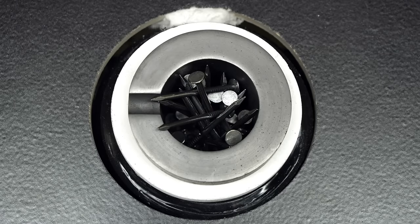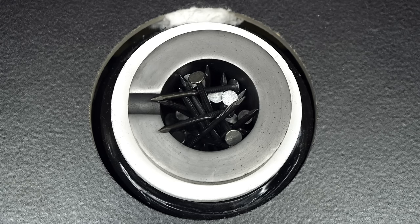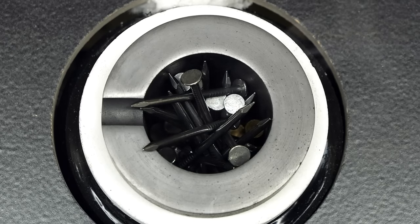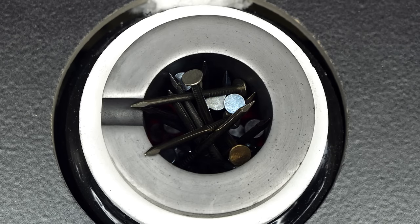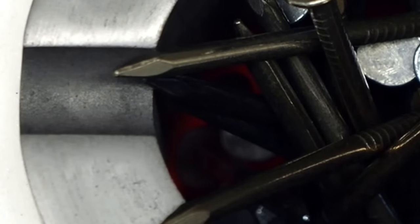At first, it didn't seem like too much was happening, but then I started seeing some smoke, which I felt was a good sign. Then, over the next 30 seconds, all of the nails started changing colors, and I could see a faint glow at the bottom of the crucible.